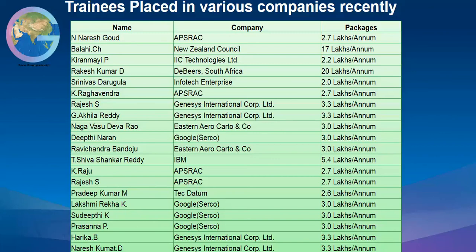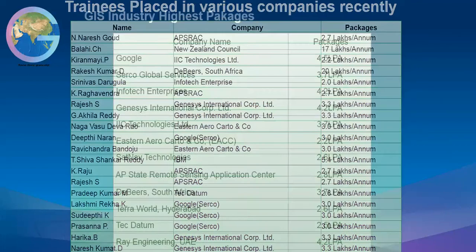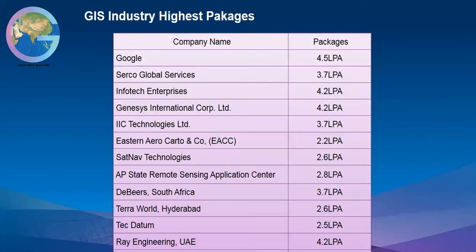Here is the list of companies where our trainees have been recently placed. The companies include Abstract, New Zealand Council, IAC Technologies, Genesis International, IBM, Techdatum, and many other companies. These are also the average packages that a GIS developer is getting on average.